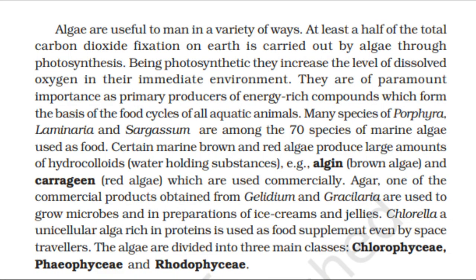Algae are useful to men in a variety of ways. At least half of the total carbon dioxide fixation on Earth is carried out by algae through photosynthesis. Being photosynthetic, they increase the level of dissolved oxygen in their immediate environment. They are of paramount importance as primary producers of energy-rich compounds which form the basis of food cycles of all aquatic animals. Many species of Porphyra, Laminaria and Sargassum are among the 70 species of marine algae used as food. Certain marine brown and red algae produce large amounts of hydrocolloids, e.g. algin from brown algae and carrageenan from red algae, which are used commercially.